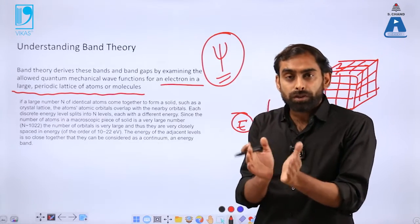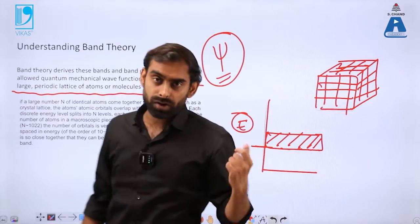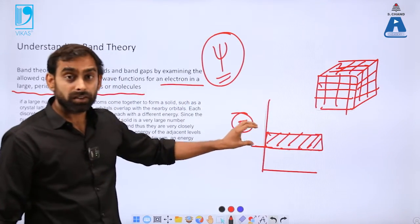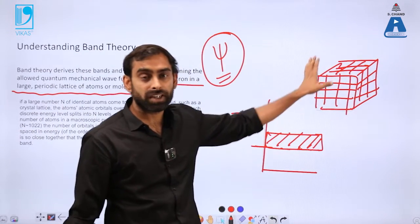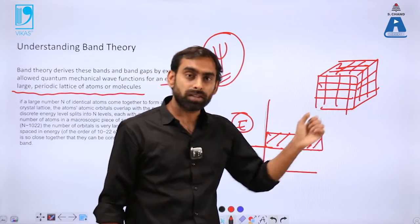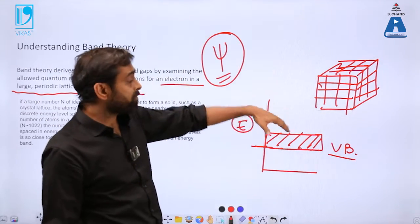These bands are not only of one type. There is a band representing valence electron energies - electrons present as valence electrons will constitute the valence band. But there will also be a forbidden band.